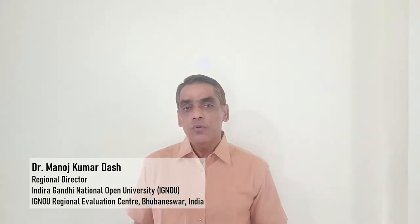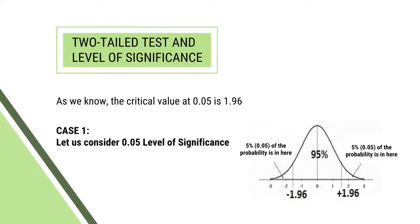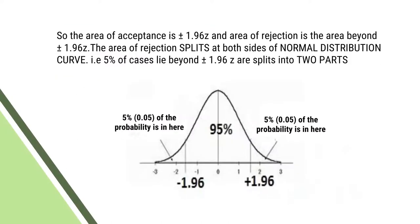Let us consider this aspect with case 1. For case 1, we consider 0.05 level of significance — alpha equals 0.05. As we know, the critical value at 0.05 is 1.96. So the area of acceptance is between plus minus 1.96 Z. The area of rejection is the area beyond plus minus 1.96 Z. The area of rejection splits at both sides of the normal distribution curve — that is, 5% of cases lie beyond plus minus 1.96 Z, split into two parts.